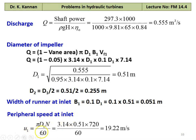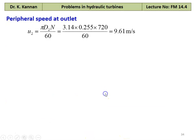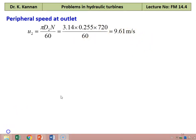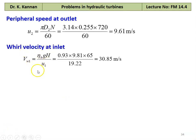The peripheral speed at the inlet: U1 equal to pi D1 N divided by 60, which is 3.14 into 0.51 into 720 divided by 60 equal to 19.22 meters per second. Peripheral speed at the outlet: U2 equal to pi D2 N divided by 60, which is 3.14 into 0.255 into 720 divided by 60 equal to 9.61 meters per second. The whirl velocity at the inlet from the definition of hydraulic efficiency: Vw1 equal to eta H into g H divided by U1, which is 0.93 into 9.81 into 65 divided by 19.22 equal to 30.85 meters per second.